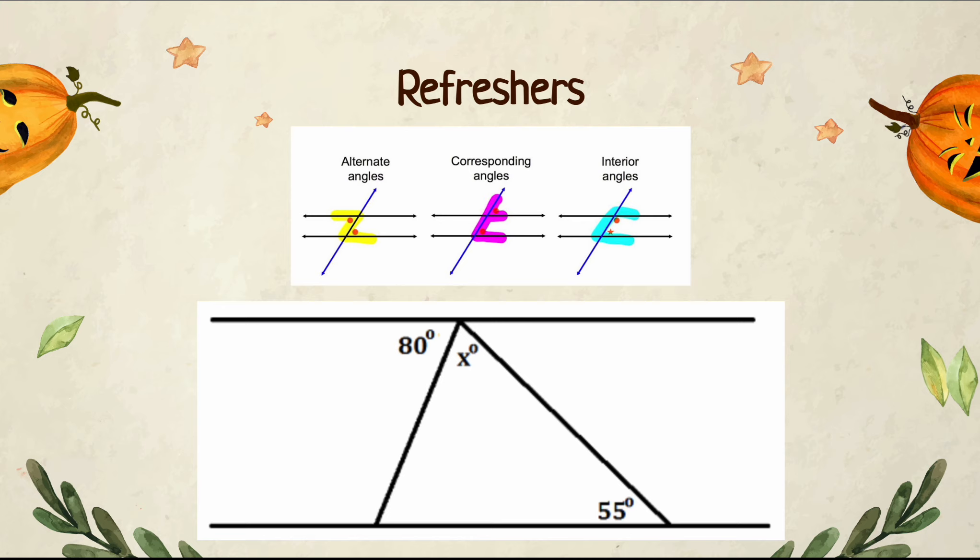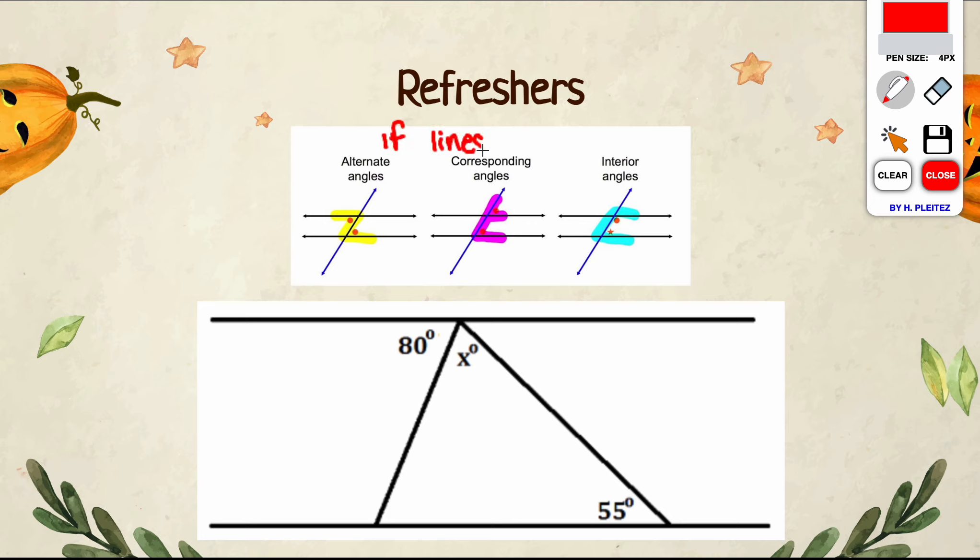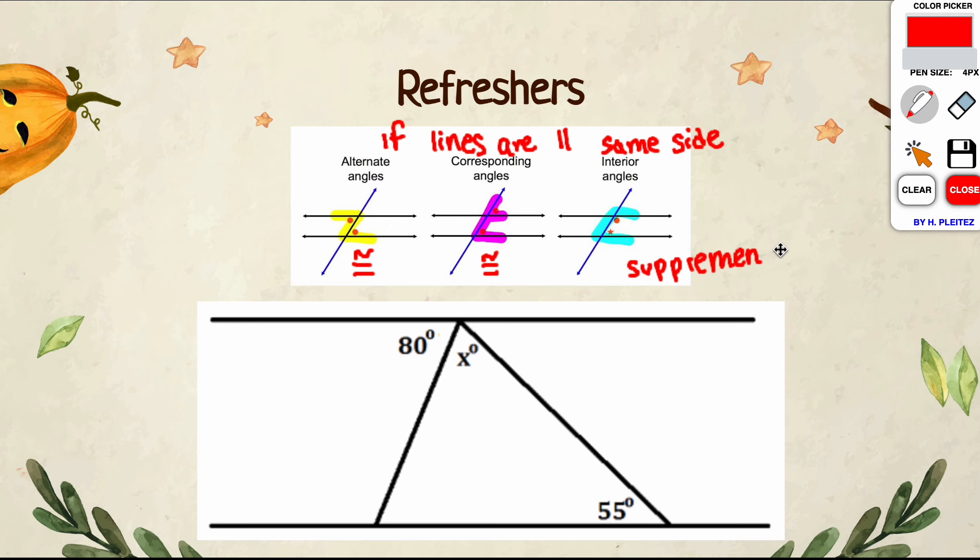We're also going to be making use of our parallel line angle theorems in this lesson. Just remember that if lines are parallel, you are able to make use of alternate interior angles, corresponding angles, and same side interior angles as well. You want to make sure you know these properties. If our lines are parallel, our alternate interior angles are congruent, our corresponding angles are congruent, but our same side interior angles are supplementary, which means they add to 180 degrees.